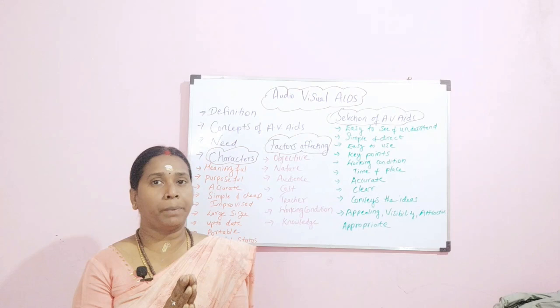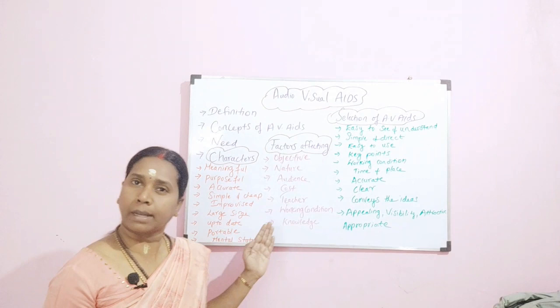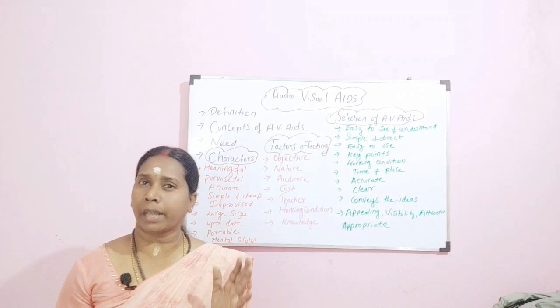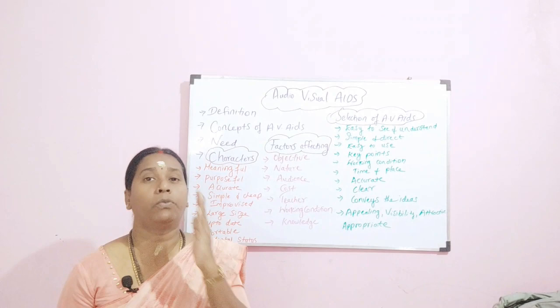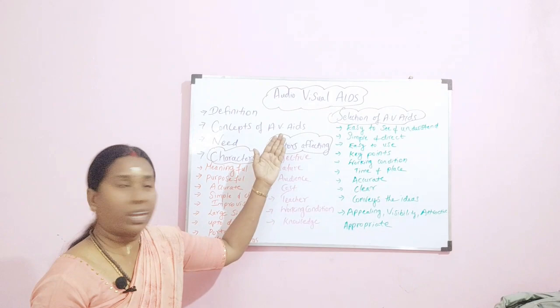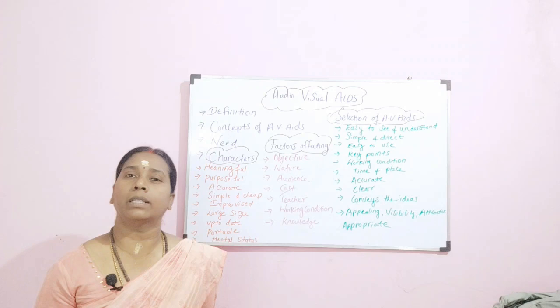Then we have the characters of AV-AIDS. When you are preparing AV-AIDS, what characteristics must it possess? When you get an AV-AIDS question for 5 or 10 marks, you will be mentioning the definition of AV-AIDS, then the concept, then the need or purpose, and then the characters.